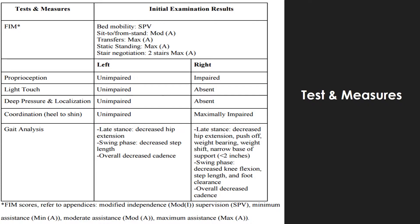A sensory neuromotor test provided results for appropriate reception, light touch, and deep pressure and localization. A heel-to-knee test was used to test the patient's coordination. Although studies have yet to provide substantial reliability and validity for the heel-to-knee coordination test and the appropriate reception testing, these two techniques have been used in various settings throughout the country to provide insight into patient sensation and coordination impairments.